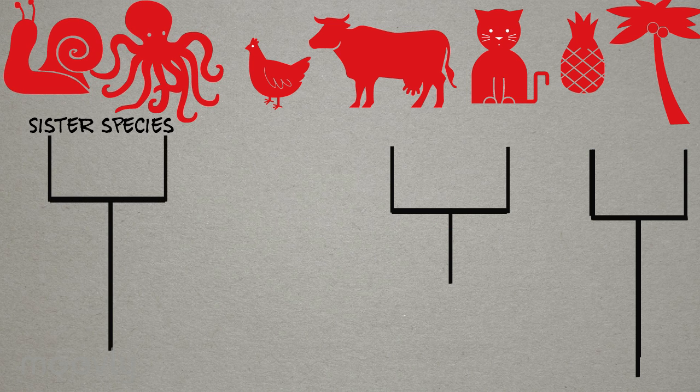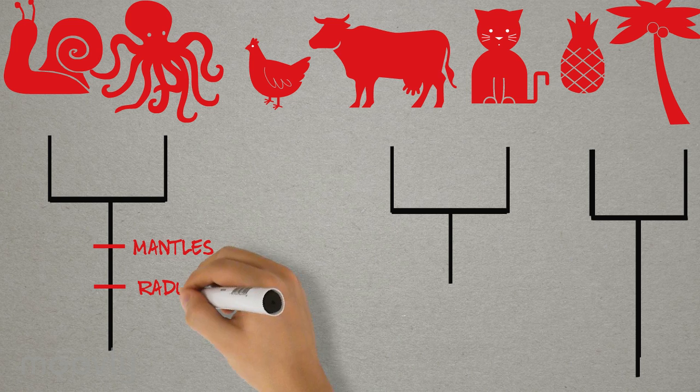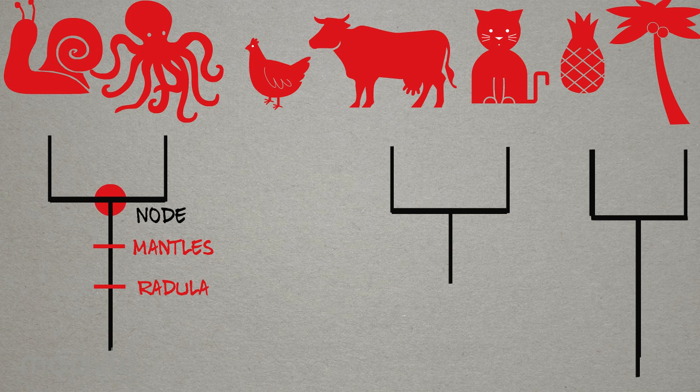Both being mollusks, the octopus and snail have the shared traits of mantles and radula, and we can again represent their most recent common ancestor here with a node.